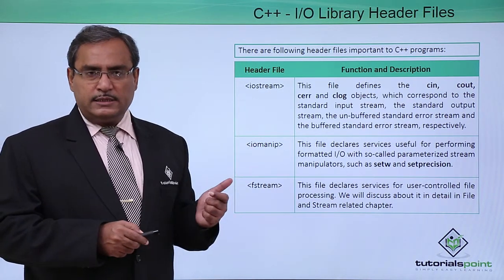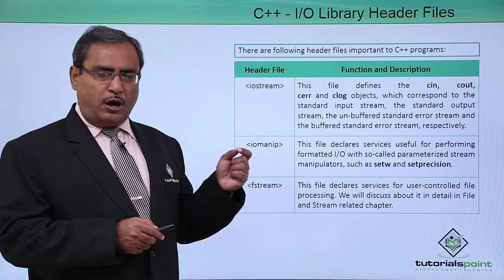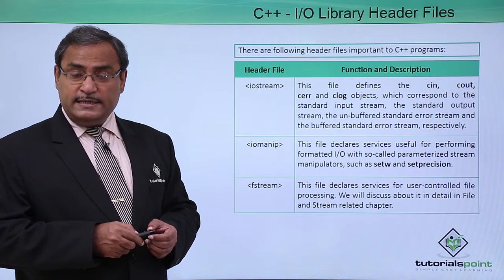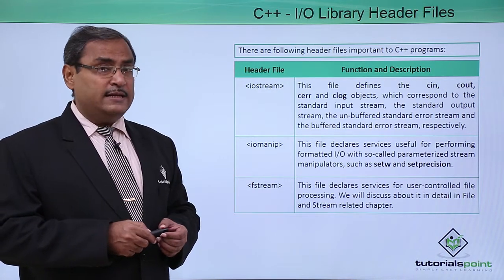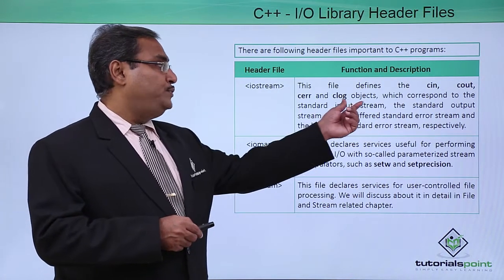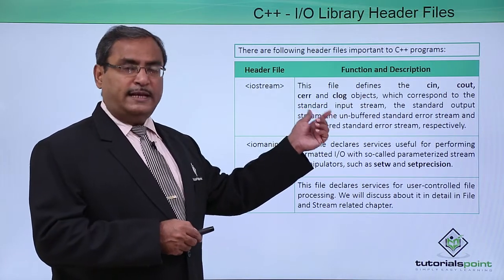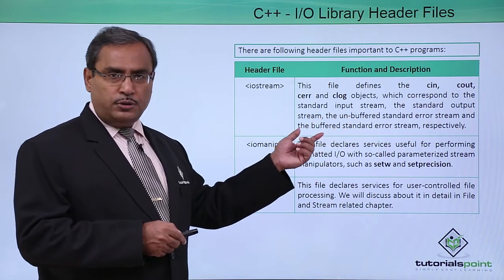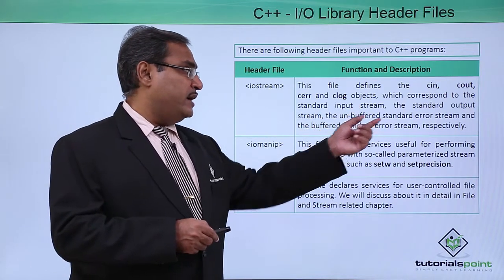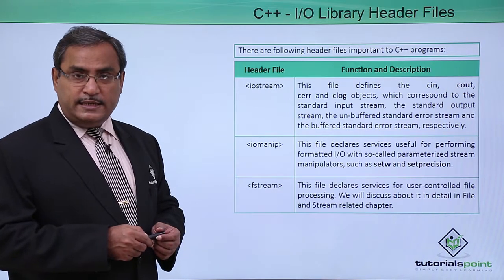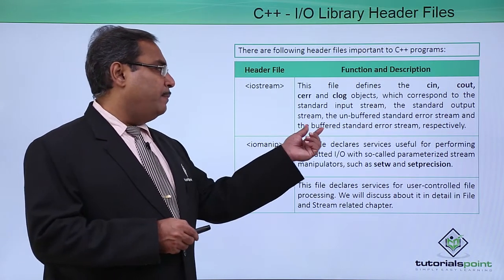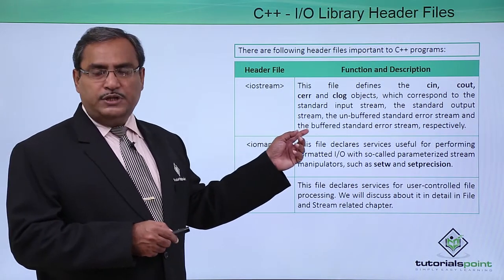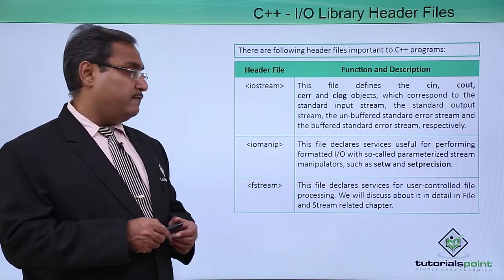The first one we are going to discuss is iostream, that is input-output stream. This file defines the CIN, COUT, CERR, and CLOG objects, which correspond to the standard input (CIN), standard output (COUT), the unbuffered standard error stream (CERR), and the buffered standard error stream (CLOG). These are the objects defined under the iostream header file.